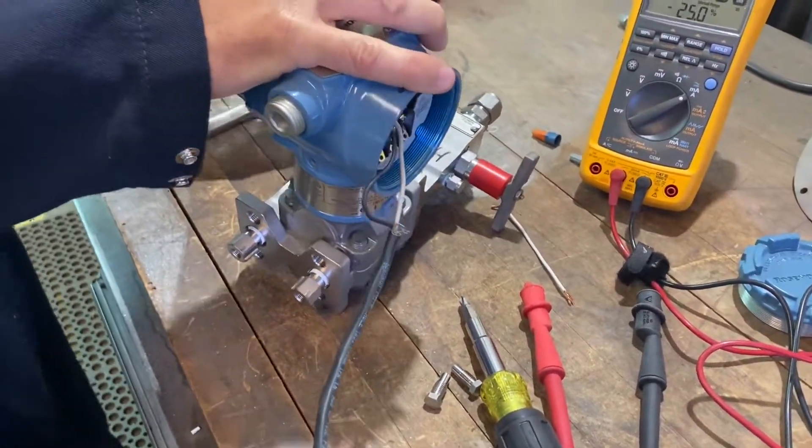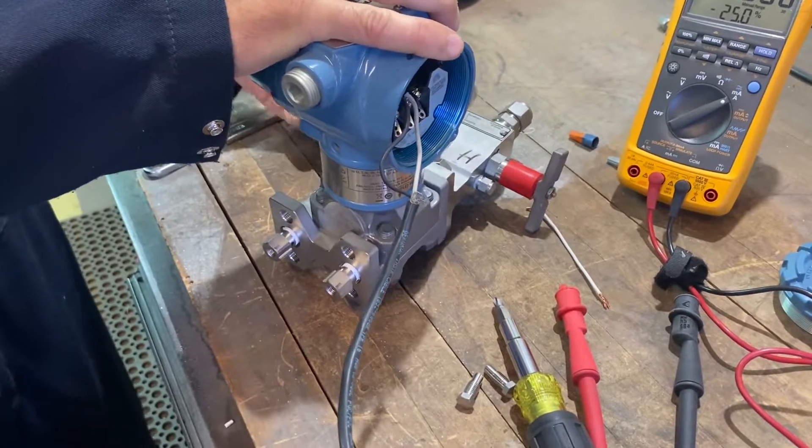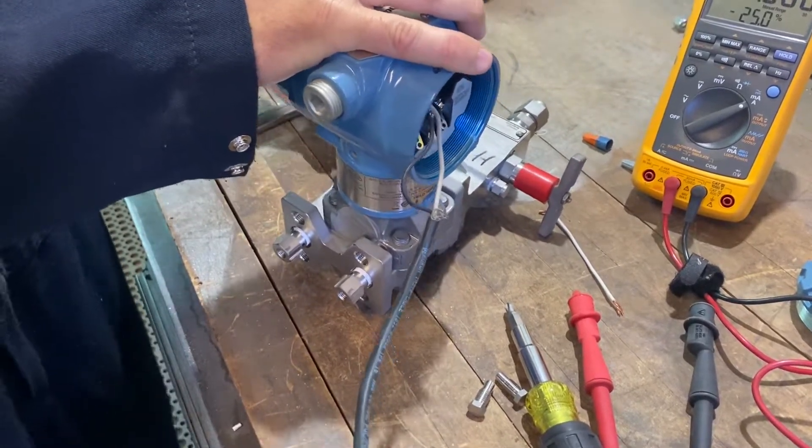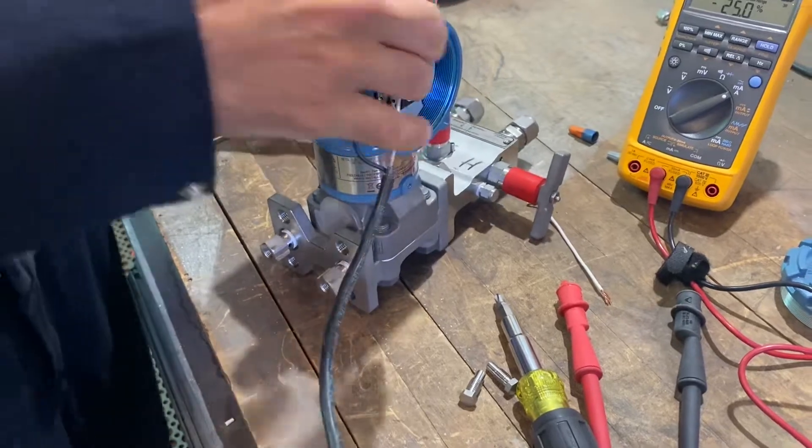Now, if you have one that's partially plugged, you'll have a wrong reading. It could be either high or low, depending on which side of the meter has the problem.